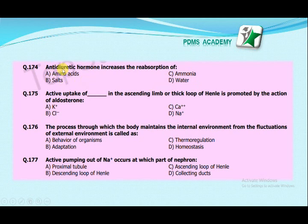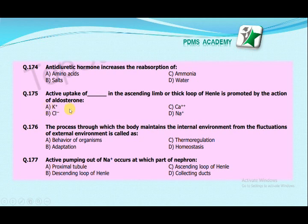Antidiuretic hormone increases the reabsorption of: amino acids, ammonia, or water? The correct answer is water, because antidiuretic hormone reduces urine production by reabsorbing water back into the body. The active uptake of which ions in the thick ascending loop of Henle is promoted by aldosterone? The correct answer is sodium.